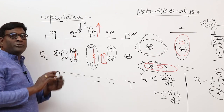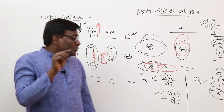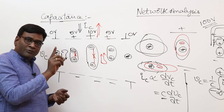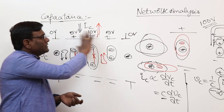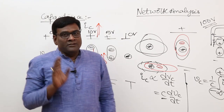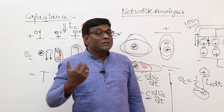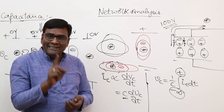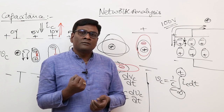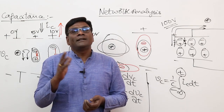The integration for voltage must be from minus infinity to t, not from 0 to t. In conclusion: for DC (constant voltage), the capacitor blocks current because dvc/dt = 0. For AC (alternating current), the voltage constantly changes, so current automatically flows through the capacitor. After this, we will discuss mutual inductance and inductance.